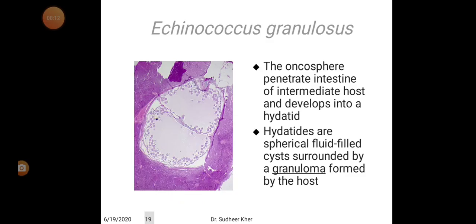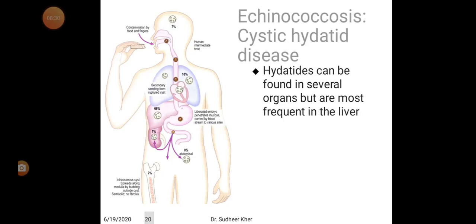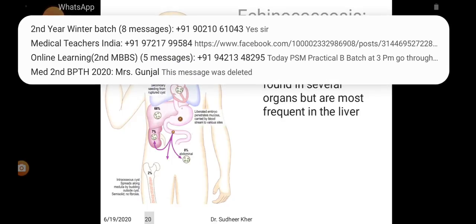Inside the hydatid cysts there is a fluid consisting of sodium and calcium salts of succinic acid. When the cyst bursts in the tissue, it causes a hypersensitivity reaction. Hydatids can be found in several organs but are most frequently in the liver. Specifically, 7% are in the brain, 10% in the lungs, 66% in the liver, 7% in the kidney, 8% in the abdomen, and 2% are intraosseous cysts.